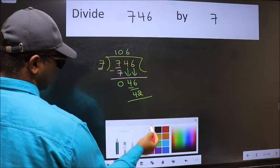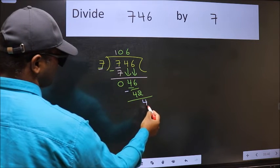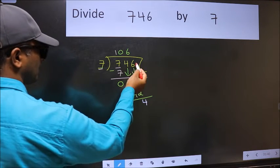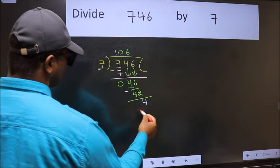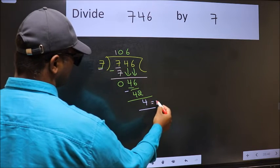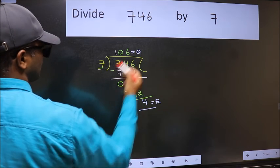Now we should subtract. We get 4. No more numbers to bring down. So we stop here. This is our remainder and this is our quotient.